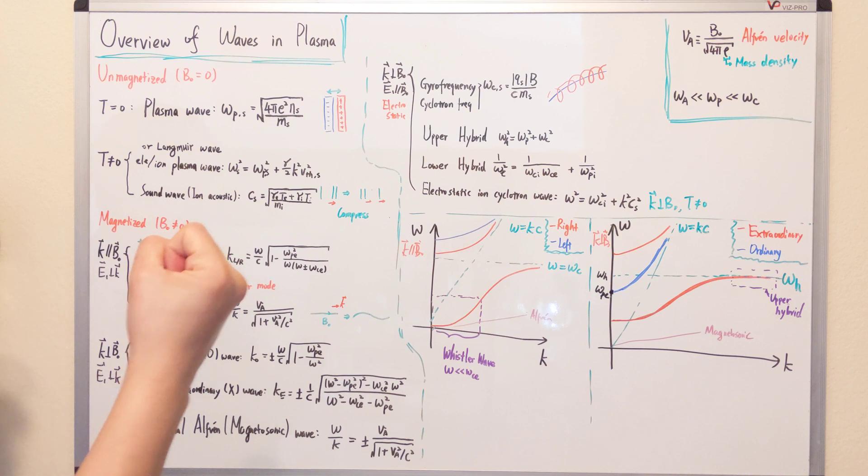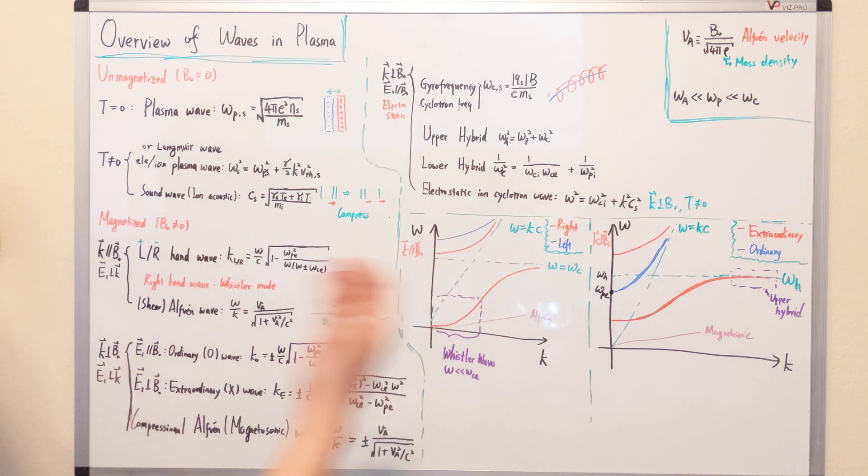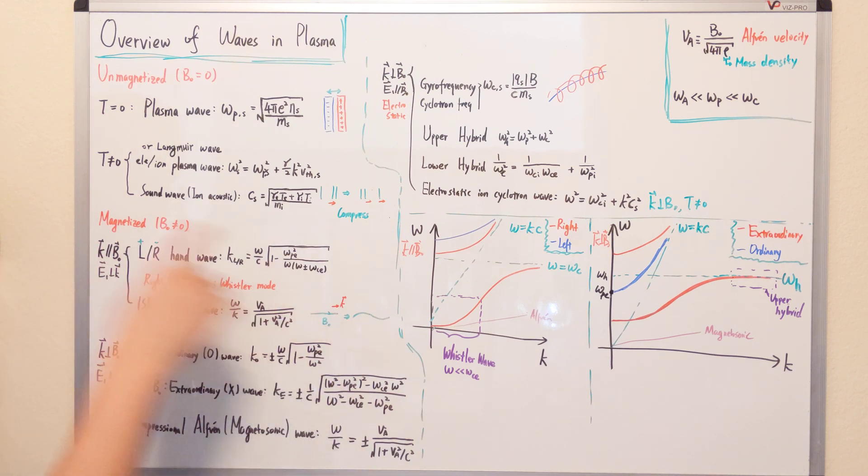You can think it's like two matters with the spring and then it will just do this motion. For magnetized plasma, those are the electromagnetic case. This is the electrostatic case. Let's talk about the electromagnetic case first.